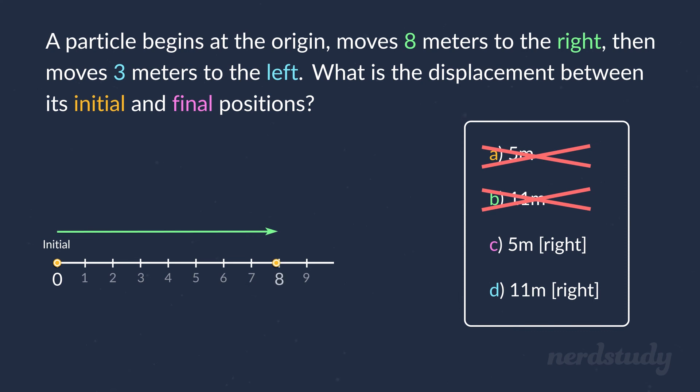ending up at five meters, making that our final position. Finally, all we need to do is subtract the final position by the initial position, which is five minus zero, giving us a displacement of five meters to the right. Therefore, c is the correct answer here.